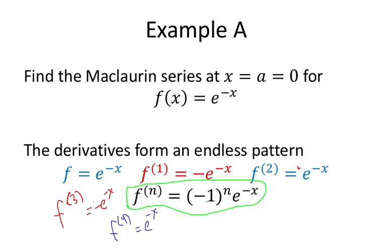Notice that odd number derivatives — such as the 1st derivative or 3rd derivative — give you a negative number. That's why it's negative 1 to the nth power: to ensure that the nth derivative has the correct sign.